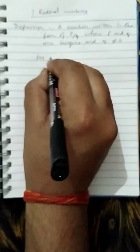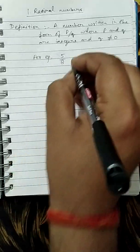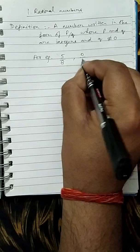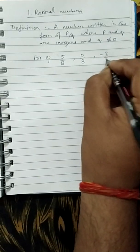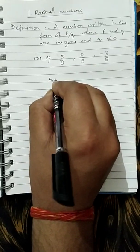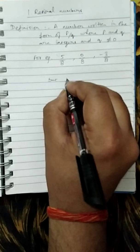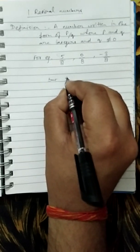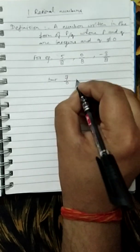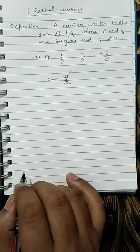For example, 5 upon 8 is a rational number. 0 upon 8 is a rational number. But you can say that 7 upon 0 is not a rational number.